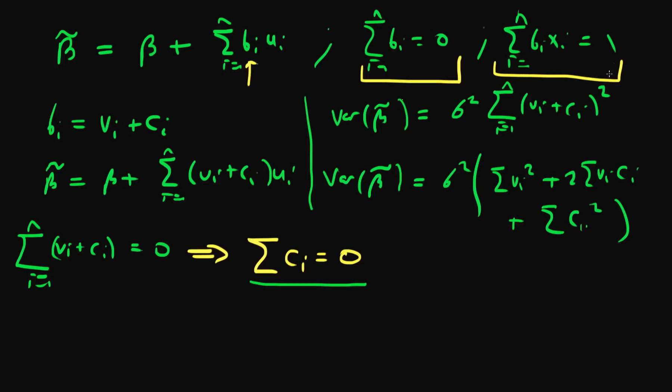Now we're going to use our second condition to derive another condition on ci. So writing out this expression using our new definition of bi, which is that bi equals vi plus ci times xi.